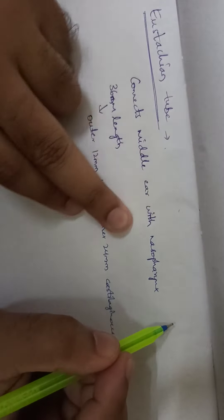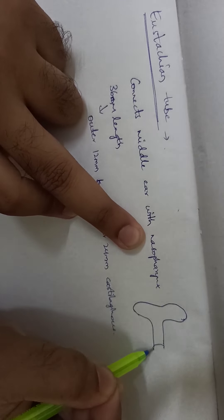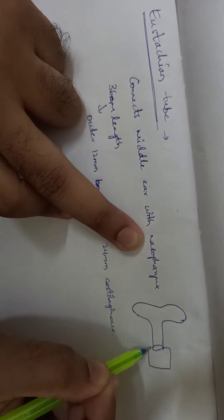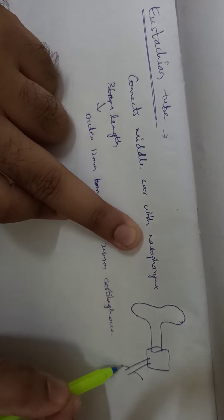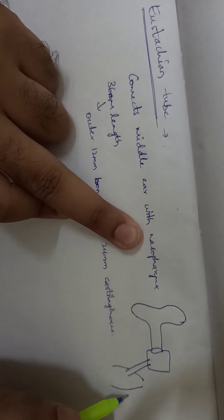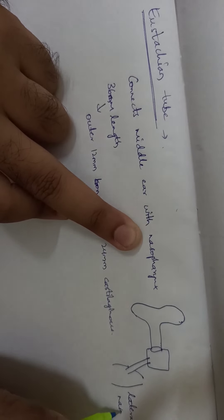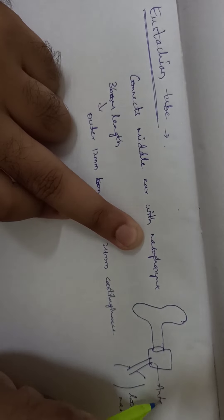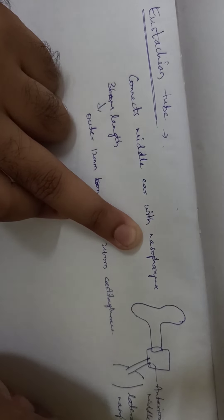If you take your ear diagram now, you have the external auditory canal, the tympanic membrane, and here you have your middle ear. From the anterior wall of the middle ear, this Eustachian tube arises and it enters the nasopharynx on the lateral wall of the nasopharynx.